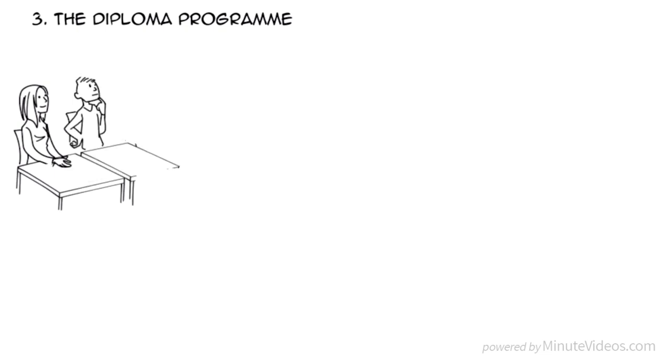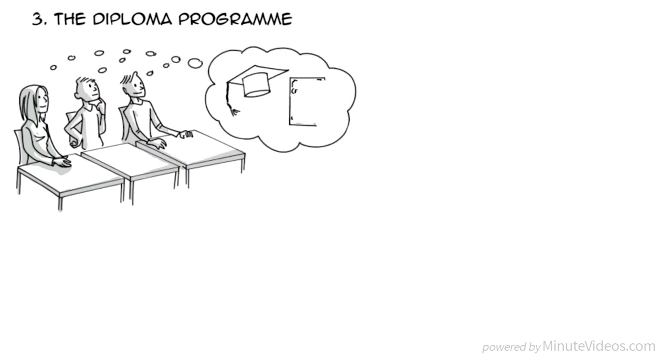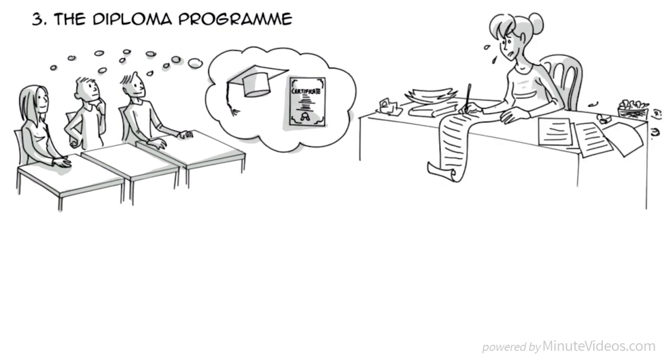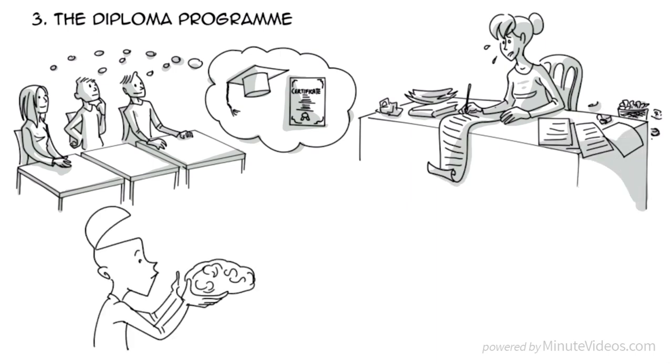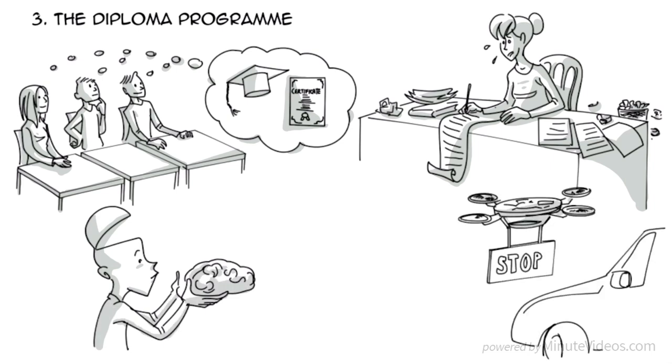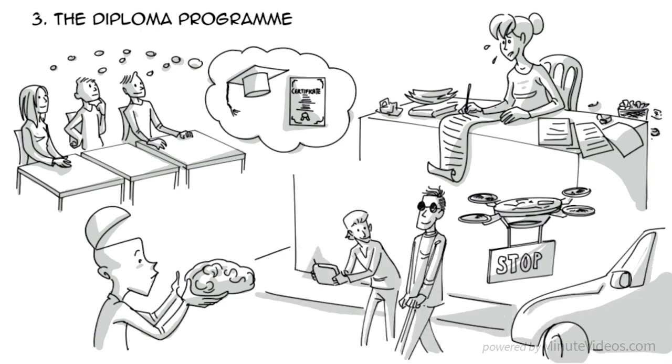3. The Diploma Programme. This is a two-year program for students aged 16 to 19 who seek a certified qualification to enter a university or another higher education institution. In addition to six elective classes, it consists of three core subjects. 1. Extended Essay Writings, 4000 Words. 2. Theory of Knowledge, in which students learn to reflect on the nature of their own knowledge. 3. Creativity, Action and Service, to learn creative thinking through experience and social work.